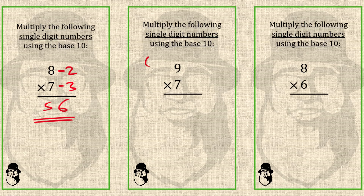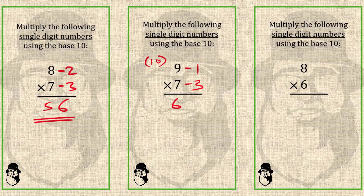Here 9 and 7 are both near 10, so we write base 10. 9 from 10 is 1, so minus 1. And 7 from 10 is 3, so minus 3. Now we cross subtract: 7 minus 1 is 6, or we can do 9 minus 3, that is also 6 — that is the left part of the answer. For the right part, we multiply the two deficiencies: 1 times 3 is 3. So 9 times 7 is 63.